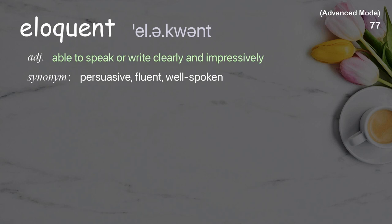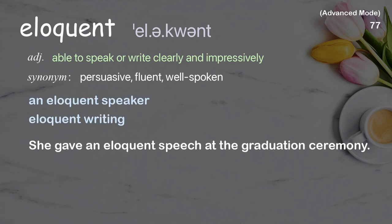Eloquent: Able to speak or write clearly and impressively. Examples: An eloquent speaker. Eloquent writing. She gave an eloquent speech at the graduation ceremony.